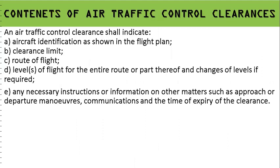Content of air traffic control clearances: ATC clearances shall indicate aircraft identification, clearance limit, flight level, and any other necessary information — such as approach or departure maneuvers, communications, and the time of expiry of the clearance. For example: 'Cathay 123, cleared to Paris via flight plan route, flight level 320, after departure turn right to intercept or proceed direct to waypoint.'